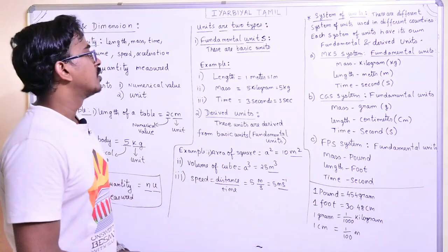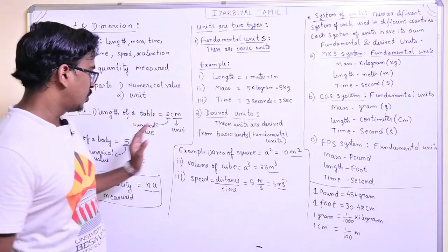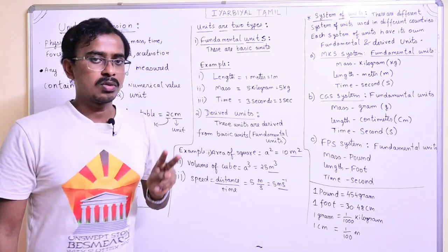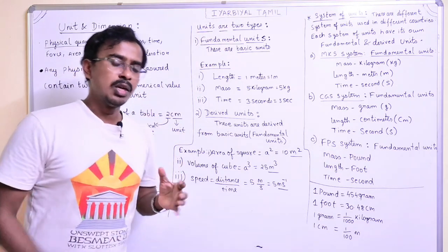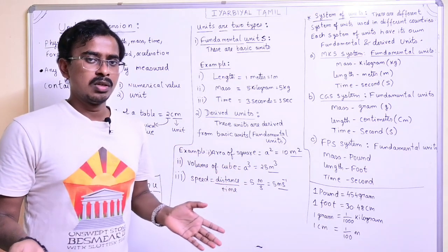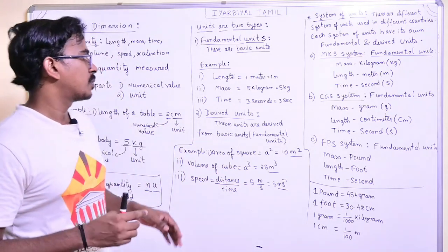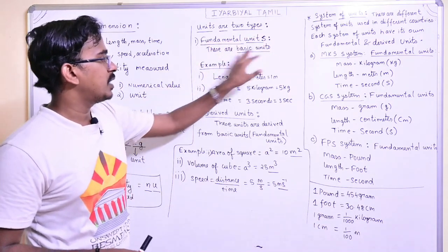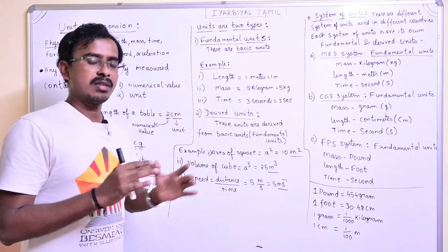Let's note here. Let's look at the units. A physical quantity has a numerical part and a unit. The units are of two types. One is the fundamental units and the other is the derived units. Fundamental units are the basic units — very base value.